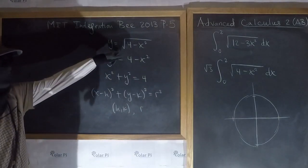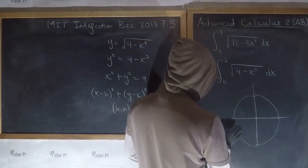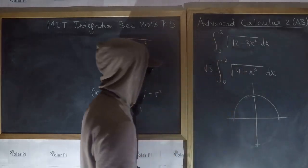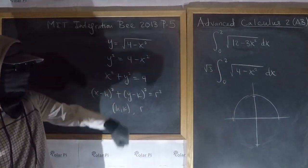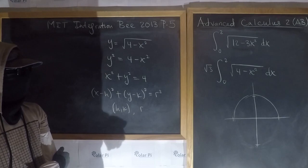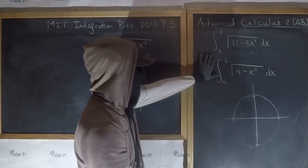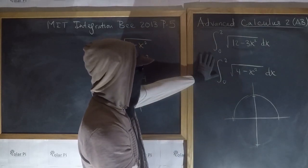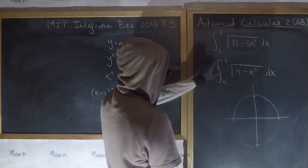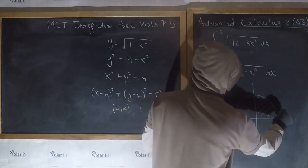Since we have the positive square root, we're concerned with the top half of the circle. The negative square root would be the bottom half, so we don't need that. The equation y equals square root of four minus x squared defines the top half of the circle. So the definite integral represents the area from zero to two underneath this curve.